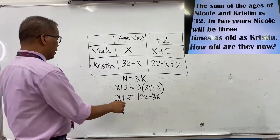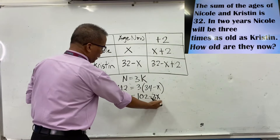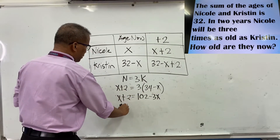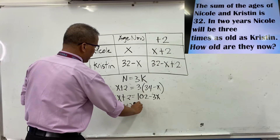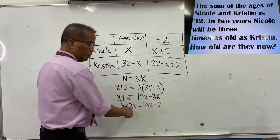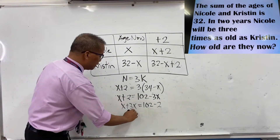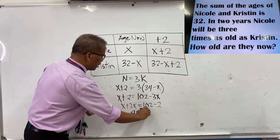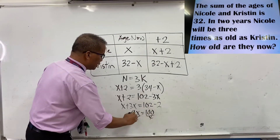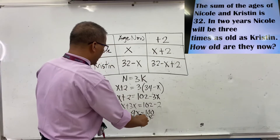Combining similar terms, we bring negative 3x to the left side, giving x plus 3x equals 102 minus 2. So 4x equals 100. Dividing both sides by 4, x equals 25.